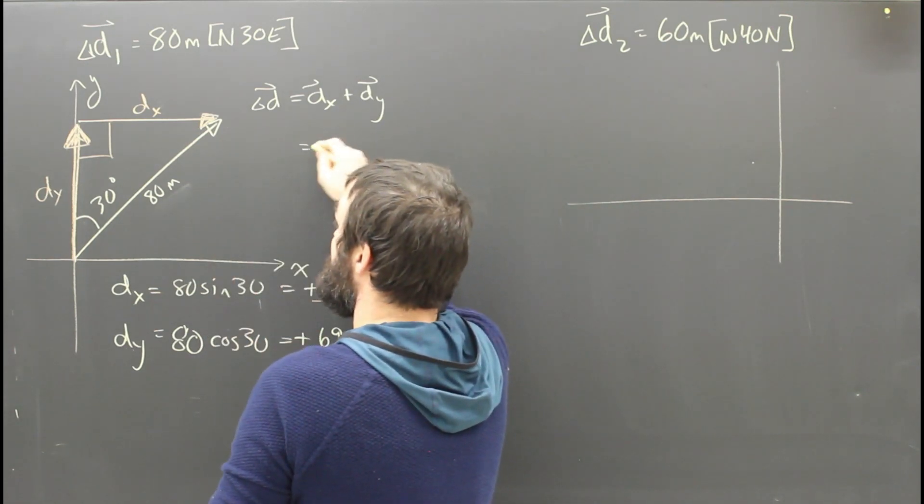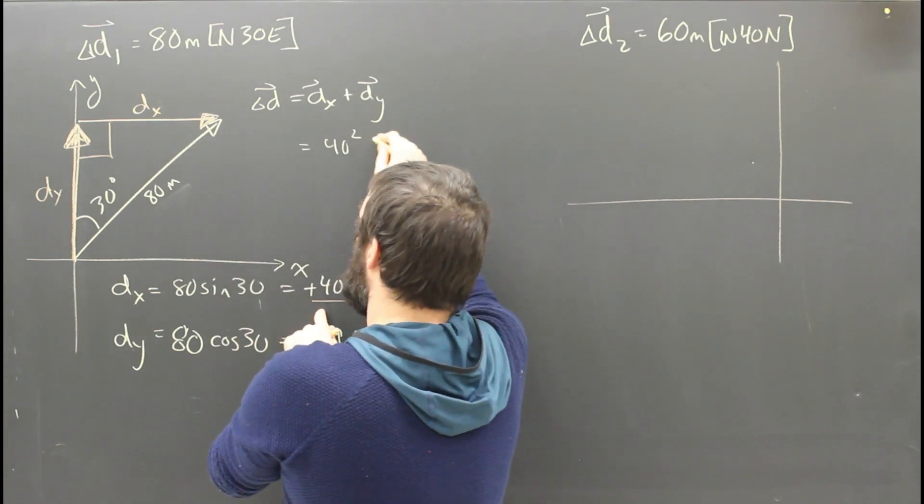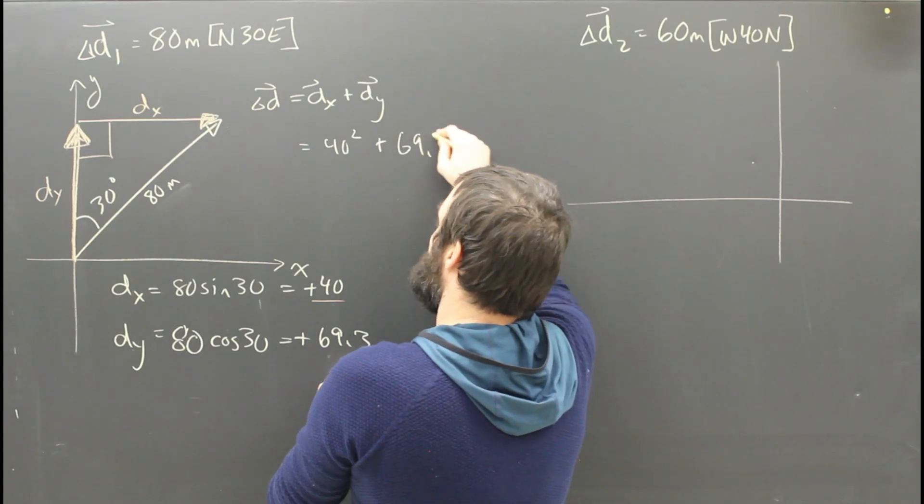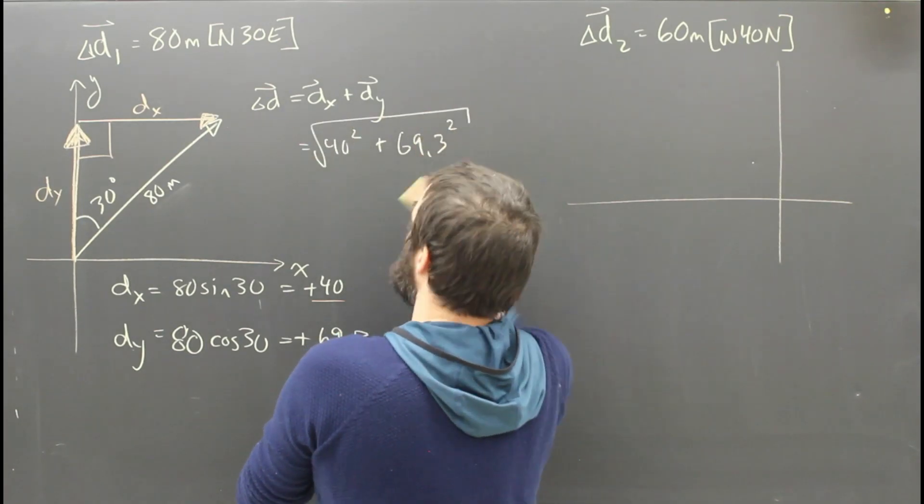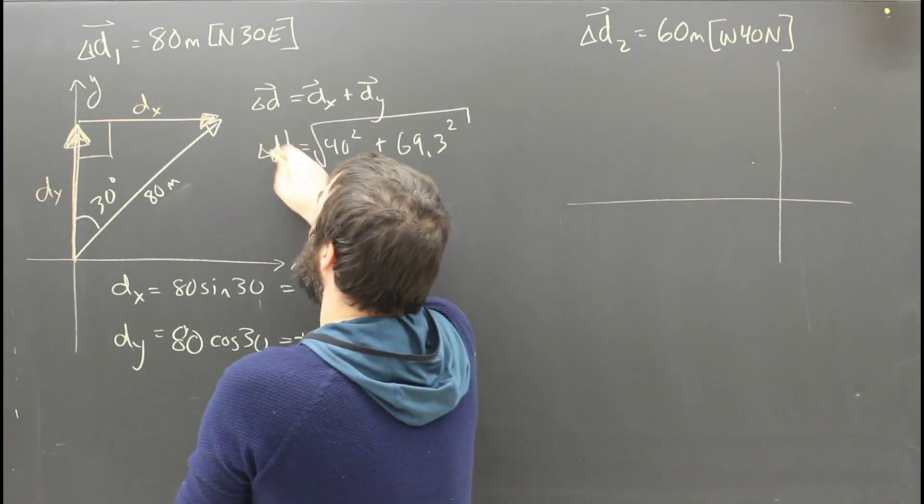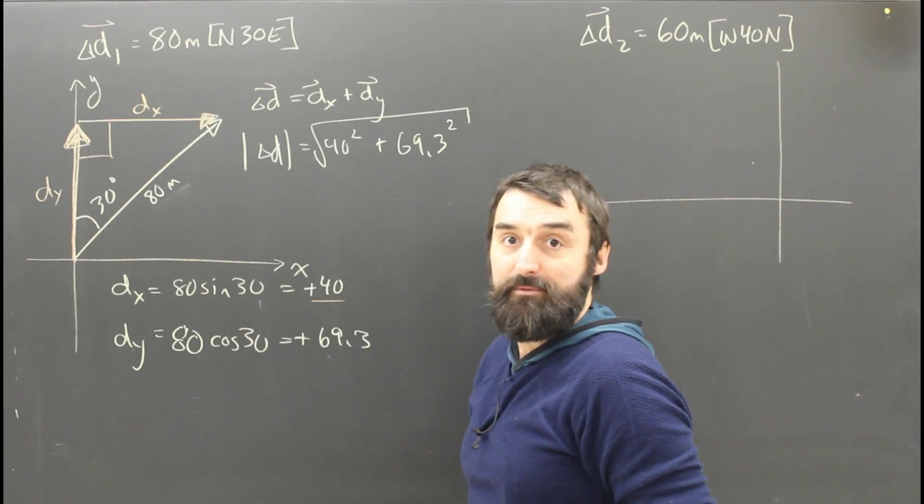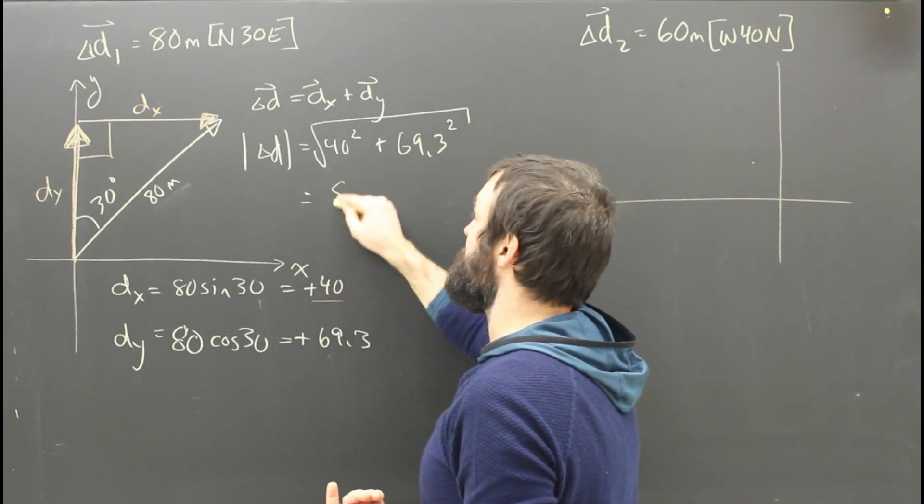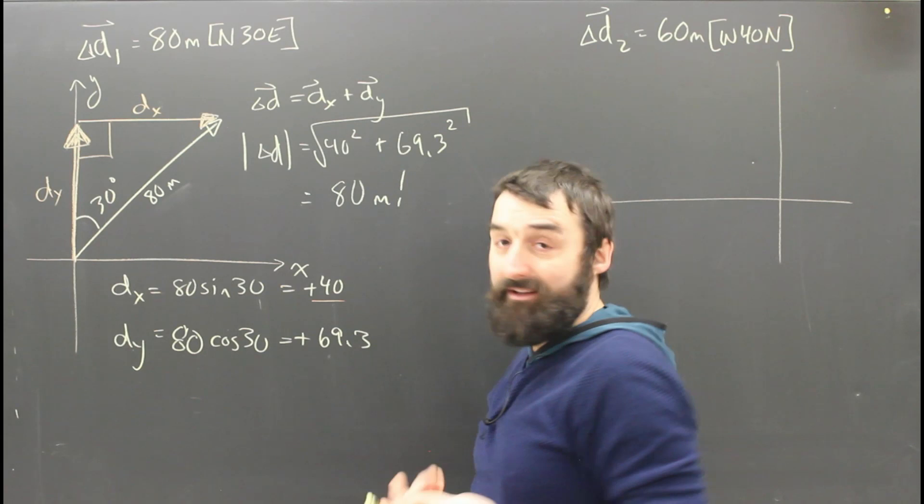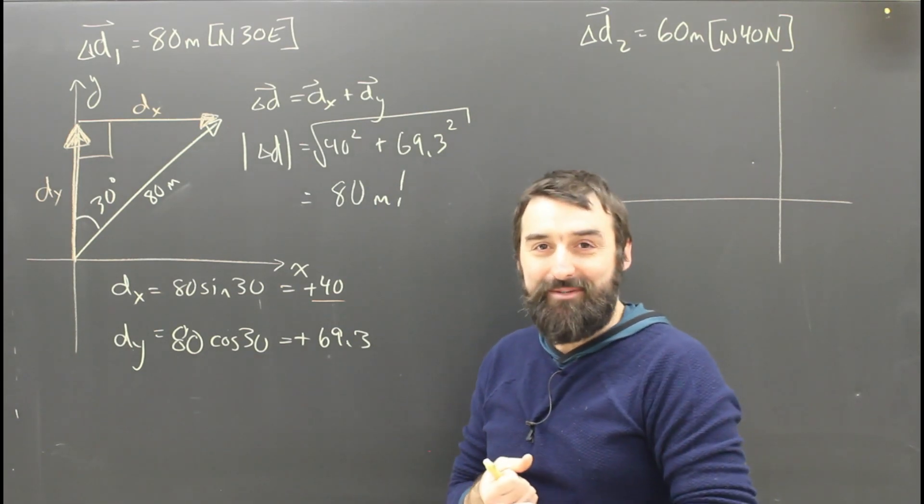then 40 squared plus 69.3 squared, all square rooted. That better equal the size of the displacement. It better equal 80 meters. And it does, and it will, because we didn't make a mistake.